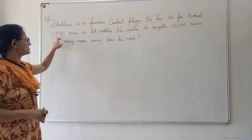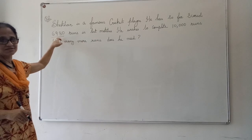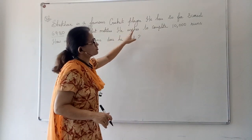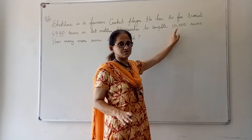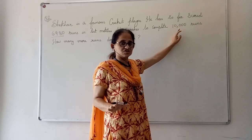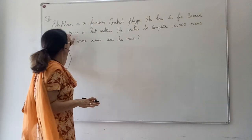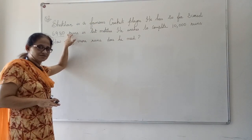Till date, his score is 6,980 runs. He wishes to complete 10,000 runs. That means his target is 10,000 runs which he wants to achieve but has not yet achieved. He has made 6,980 runs.